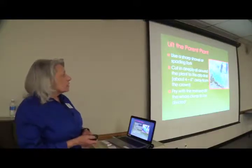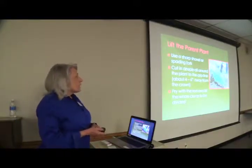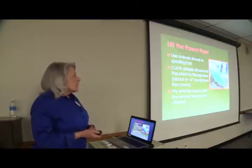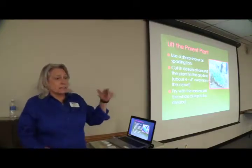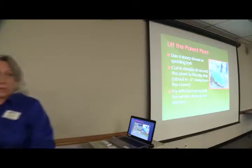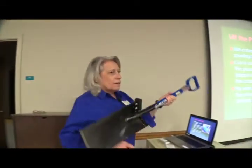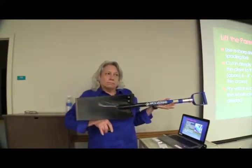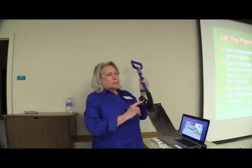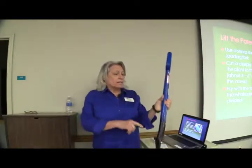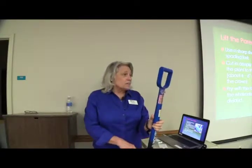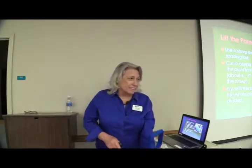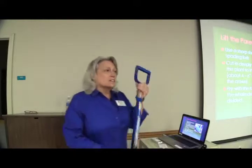Use a sharp shovel or spading fork and cut deeply all around the plant to the drip line, about four to six inches away from the crown, then pry with the tool and lift the whole clump to be divided. Here's my new shovel — it's called the Wolverine. You can see how long this blade is, sharp, with a nice foot pad so you can step on it. This is the kind of shovel you want to use for that.